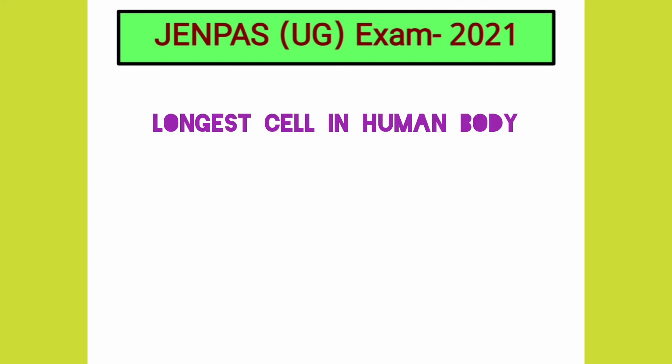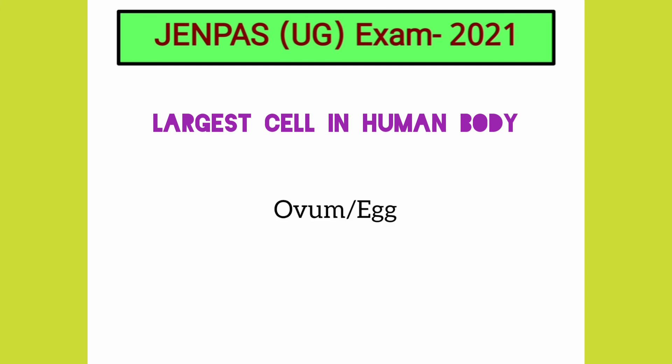What is the longest cell of the human body? A nerve cell is the longest cell in the human body. The human egg or ovum is the largest cell in the human body.